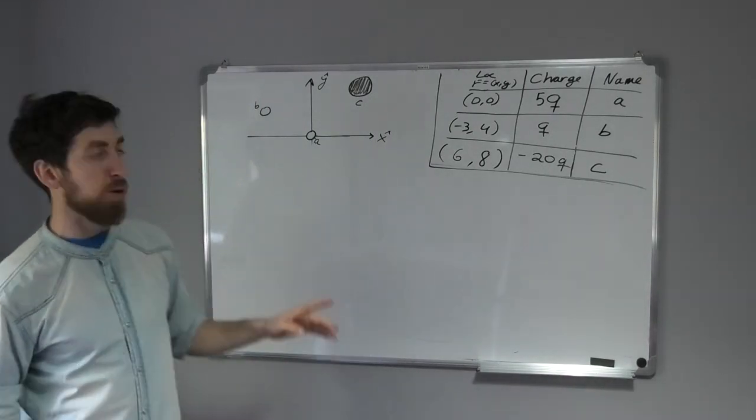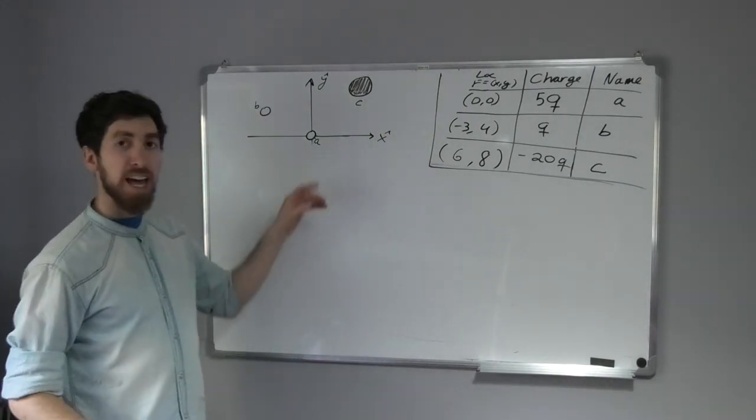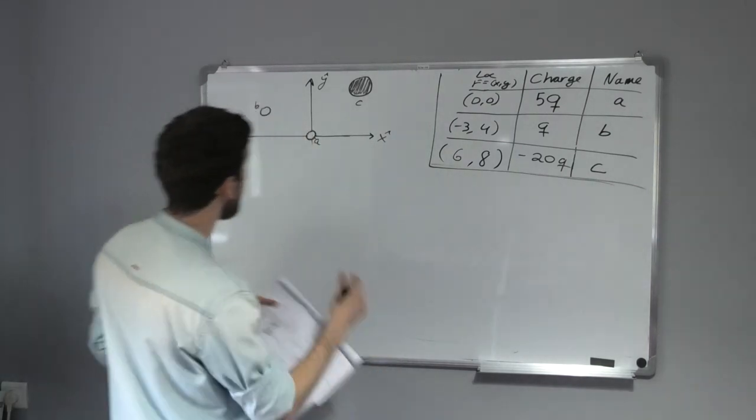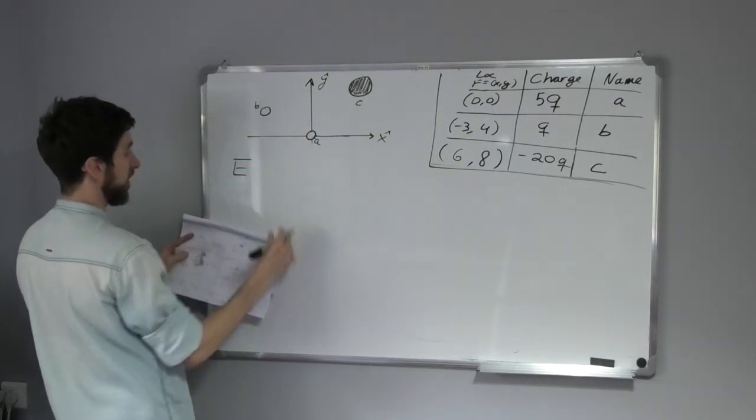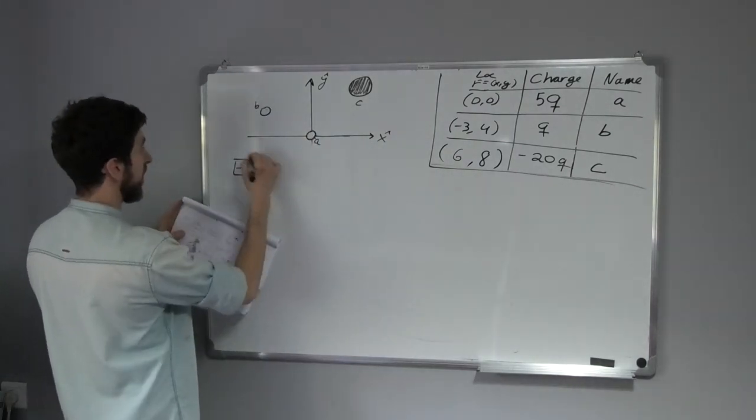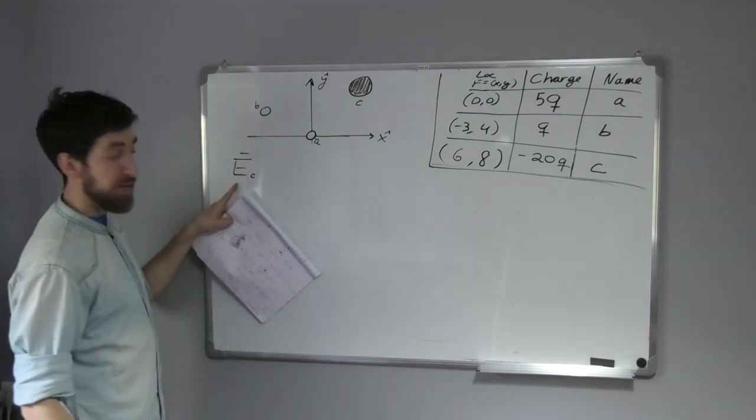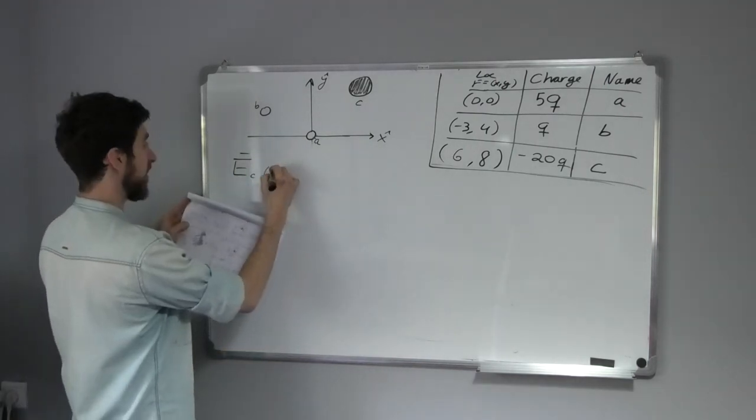Okay guys, so we found what is the force that B applied on A. And now what I want to ask you is what is the electric field that Marvel C is doing, applying on this table? So this is our question.